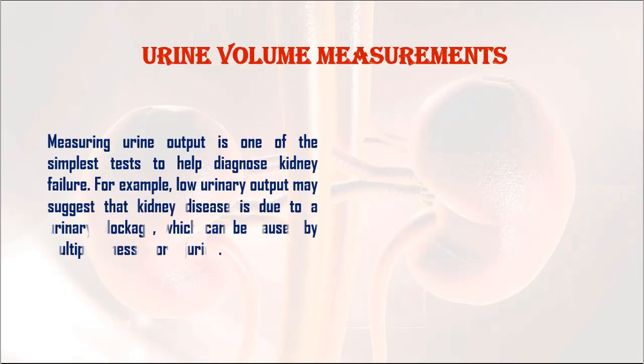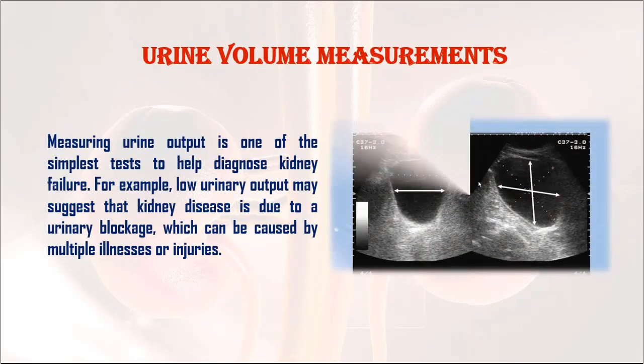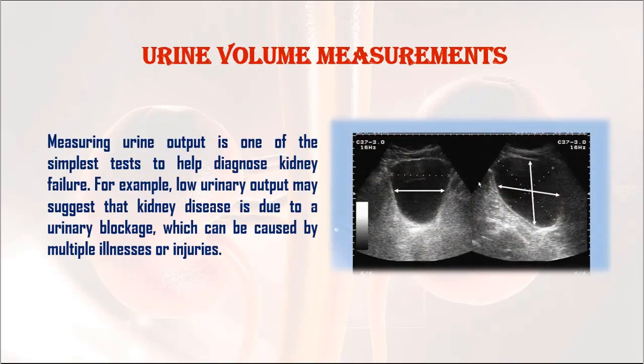Urine volume measurements: Measuring urine output is one of the simplest tests to help diagnose kidney failure. For example, low urinary output may suggest that kidney disease is due to a urinary blockage, which can be caused by multiple illnesses or injuries.